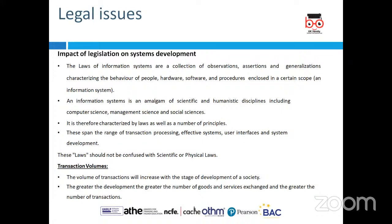We can now see how these legal issues can impact our legislation on our system development. The law of the information system will now be a collection of observations, assertions and generalisations characterising human behaviour. It also covers the hardware, software and all the procedures which will now be invoked. The information system will now be an amalgam of scientific and humanistic disciplines, which will include computer science, management science and social science.